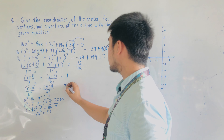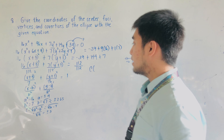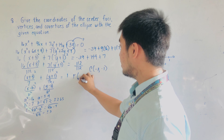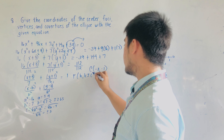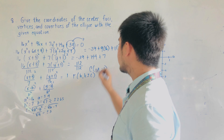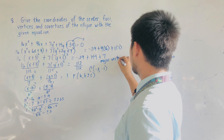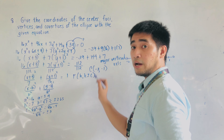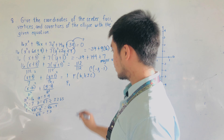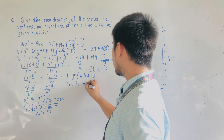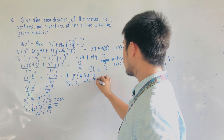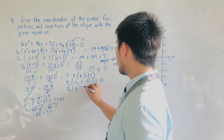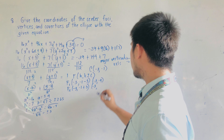Based on the equation, the center is at (negative 3, negative 1). Since we have a major vertical axis, the foci are at (h, k plus or minus c). So f1 is at (negative 3, negative 1 minus 3) which is (negative 3, negative 4), and f2 is at (negative 3, negative 1 plus 3) which is (negative 3, positive 2).